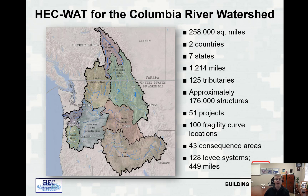The granddaddy of them all is the Columbia River watershed — a huge study covering 258,000 square miles, two countries (United States and Canada), seven states, 1,200 miles of hydraulics, 125 tributaries, 176,000 structures, 51 reservoir projects, 100 fragility curve locations, 43 consequence areas, and 128 levee systems incorporating 449 miles of levees.